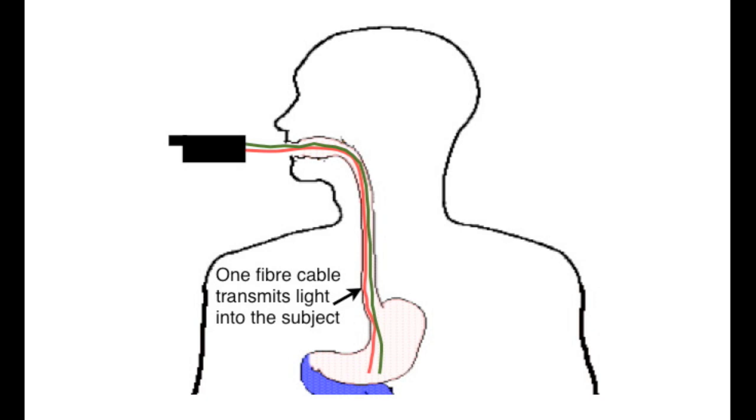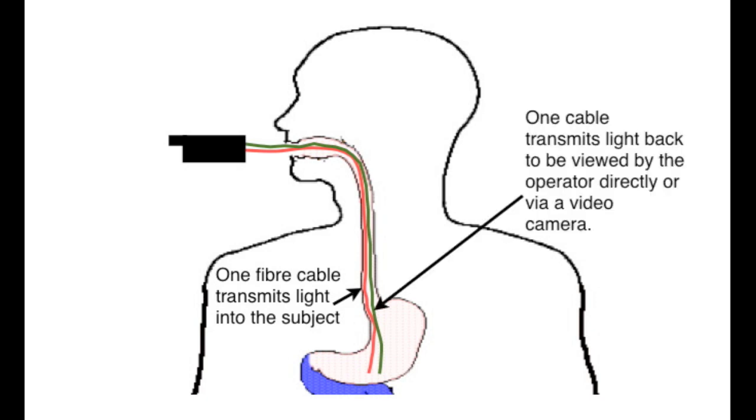Optical fibres can be used to inspect very inaccessible places, as with this endoscope here. The cables can be slipped down the throat of the patient, one to carry the light to the subject, and one to carry the images back to be viewed directly by the operator or by video camera.